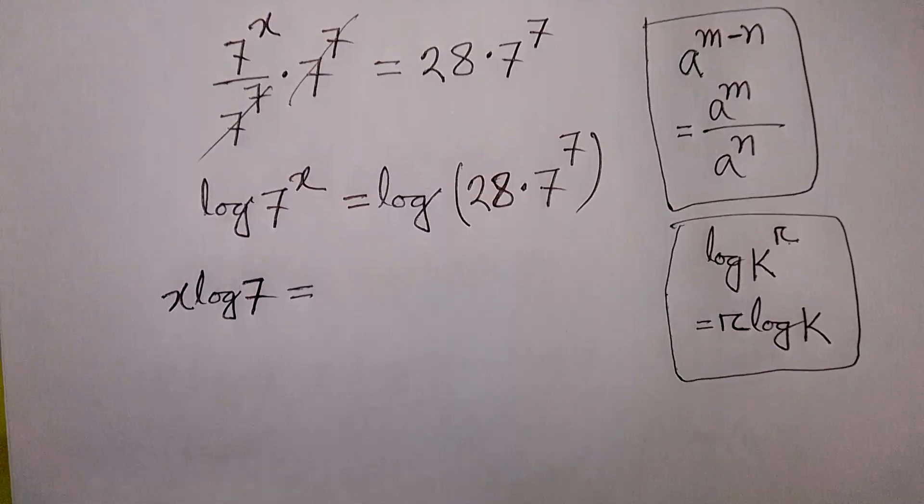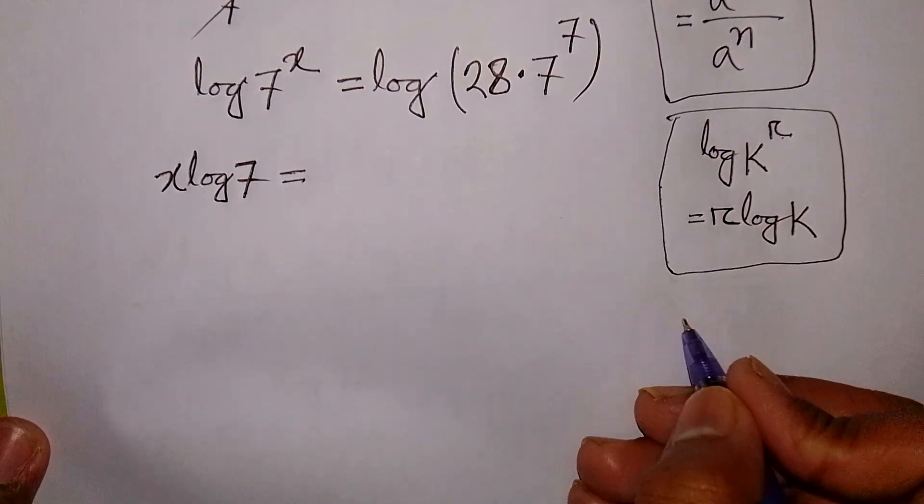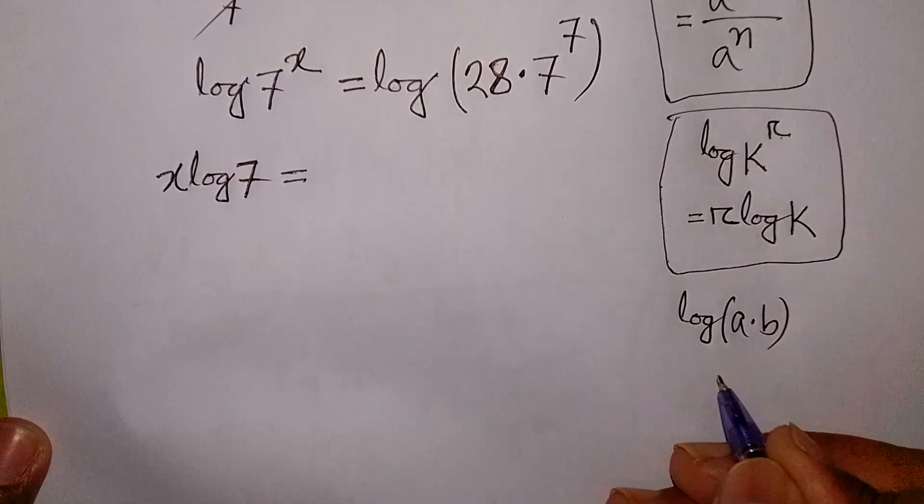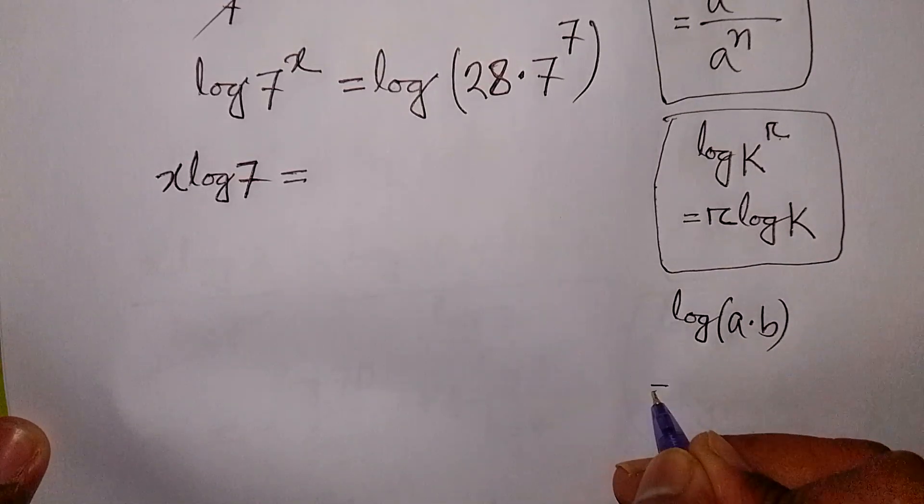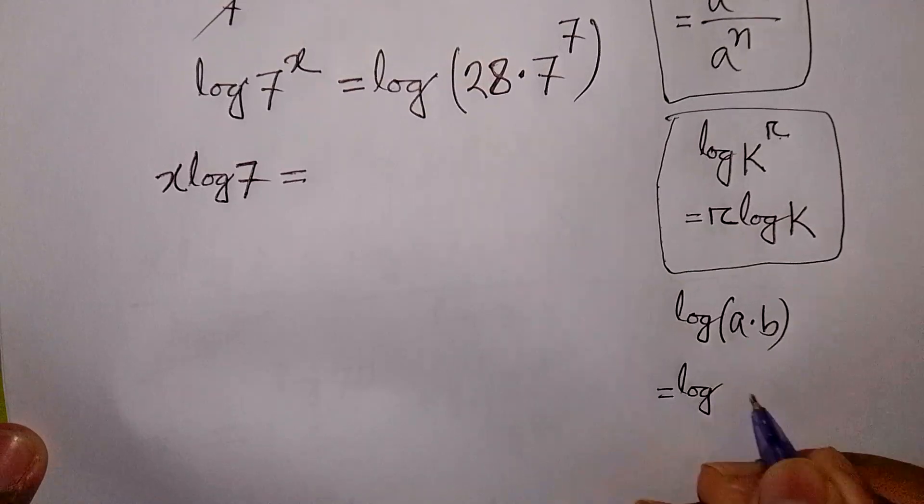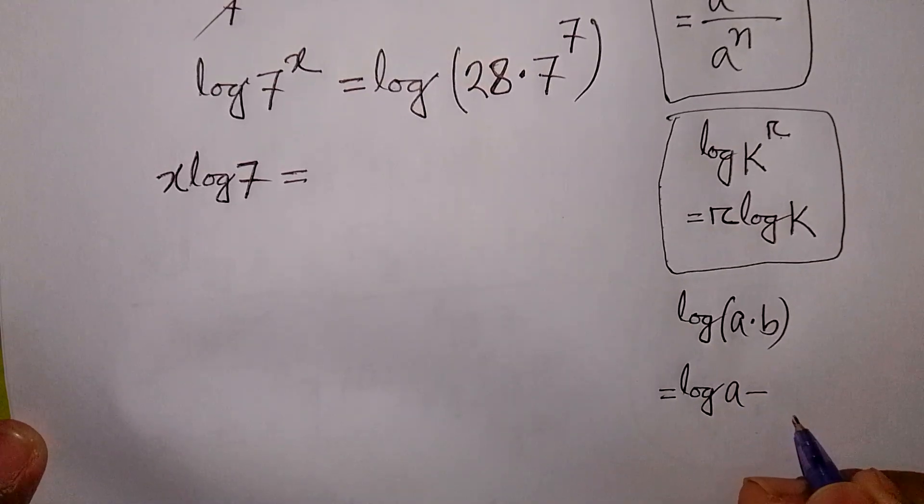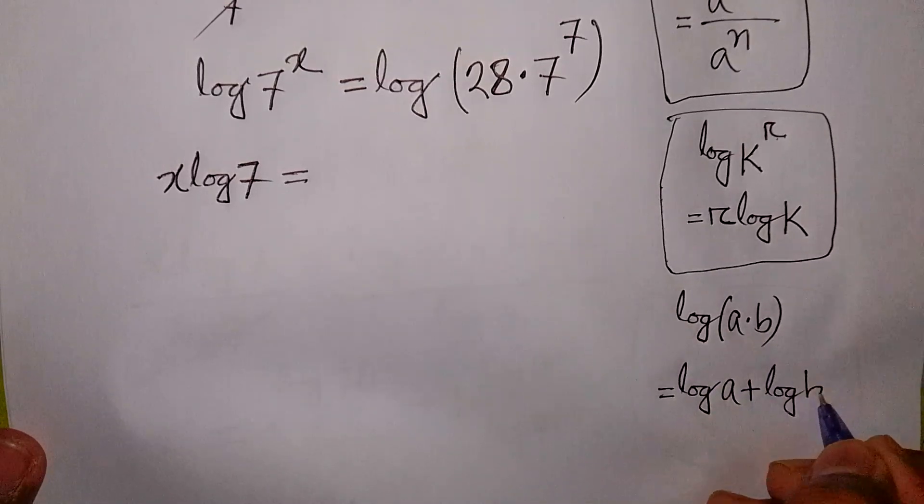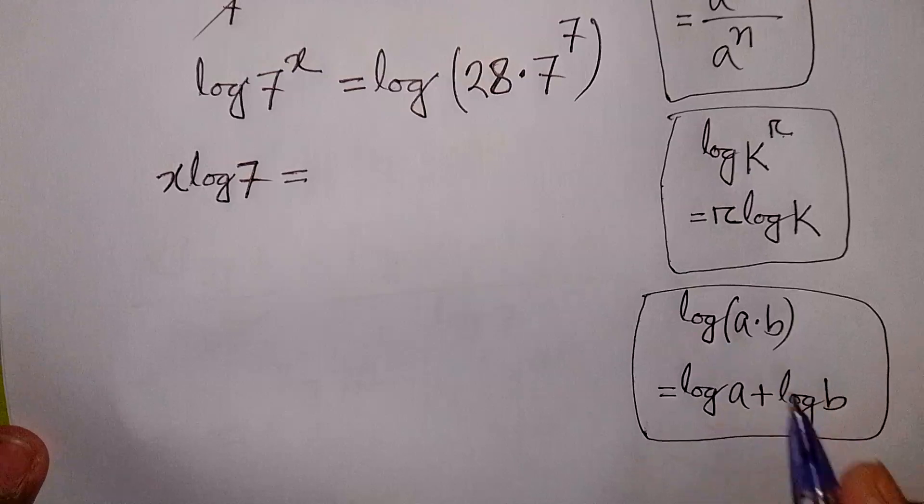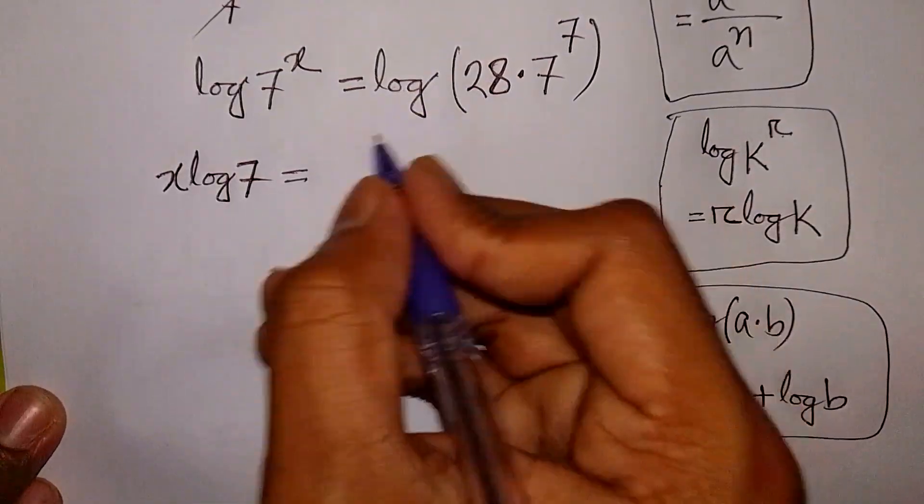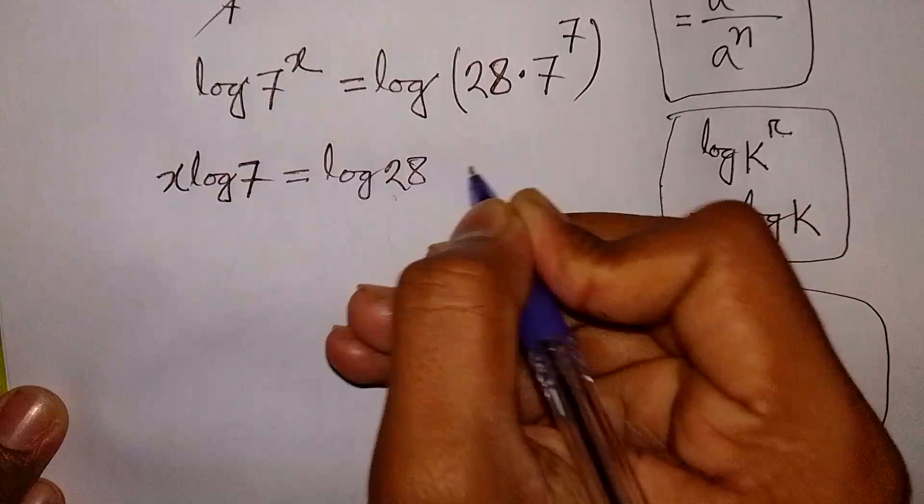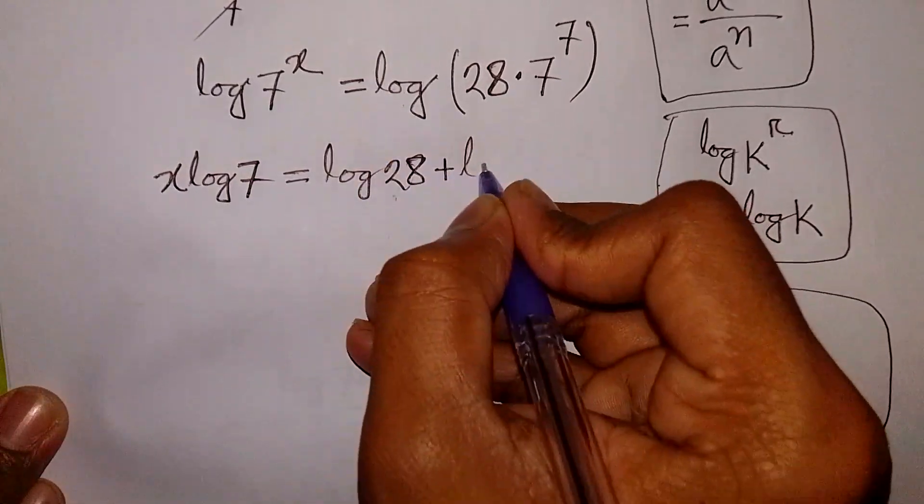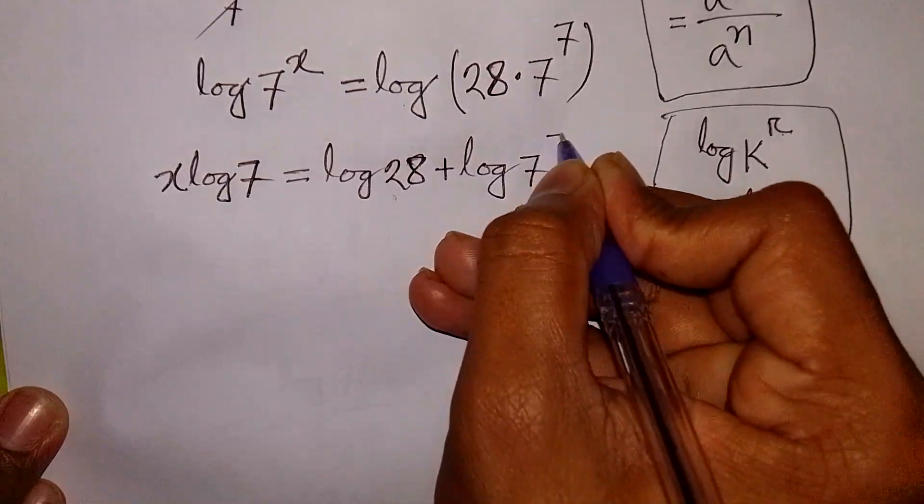Here, we also apply this formula: log of a times b is equal to log a plus log b. So it will be log 28 plus log 7 power 7.